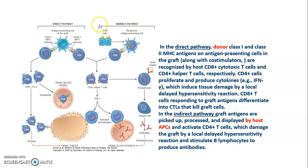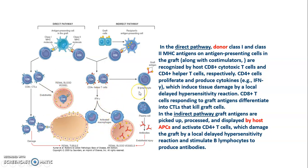In the indirect pathway, the graft antigens are picked up, processed, and displayed by the host APCs. In the indirect pathway, the host antigen presenting cells play a role. They activate CD4 T cells, which further damage the graft by delayed hypersensitivity reaction, and further activate B lymphocytes to form antibodies through plasma cells, leading to endothelitis.